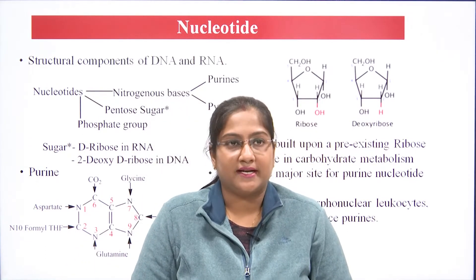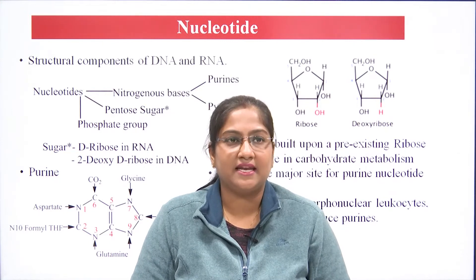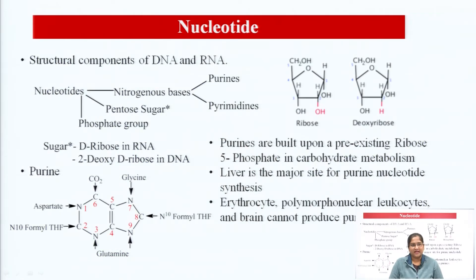What are nucleotides? Nucleotides are the structural components of DNA and RNA. We already know what DNA and RNA are. DNA is deoxyribonucleic acid and RNA is ribonucleic acid. As the name suggests, it has nucleic acid, it has a sugar moiety, and it has a phosphate group. A nucleotide is the combination of all three of these.